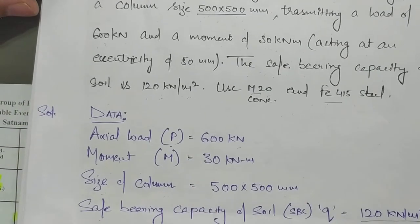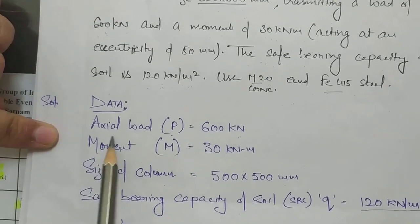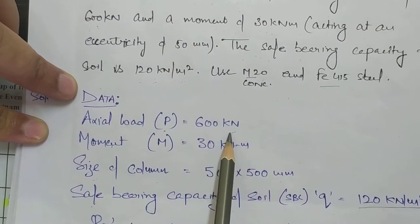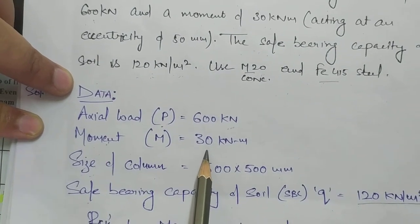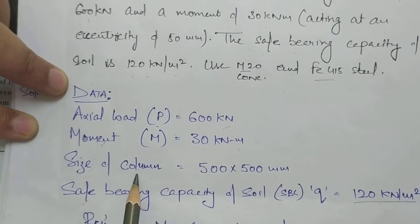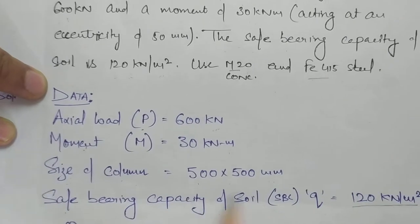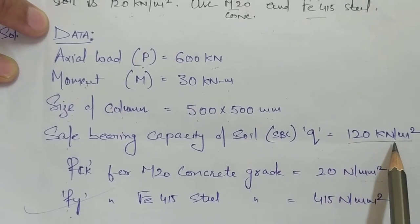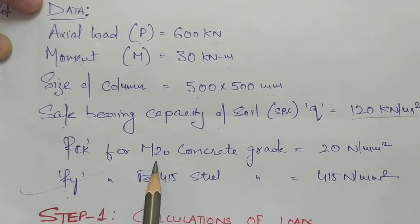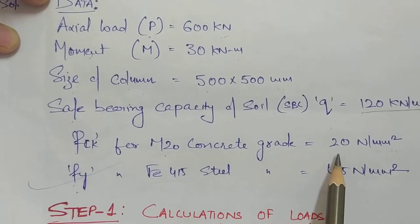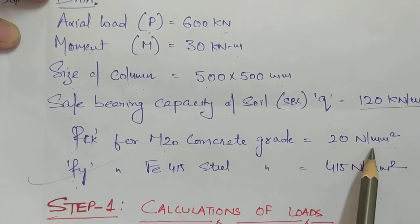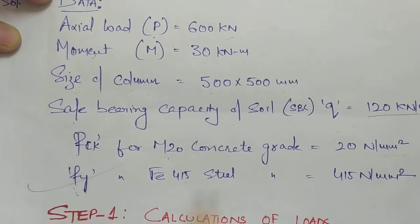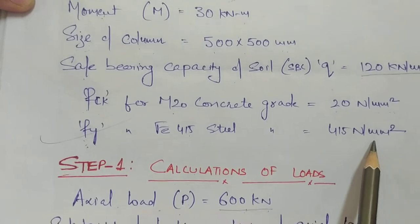First, we write the given data. Axial load P = 600 kilo Newton, moment M = 30 kilo Newton meter, column size = 500×500 mm, safe bearing capacity Q = 120 kilo Newton per square meter. For M20 concrete, FCK = 20 N/mm², and for Fe415 steel, FY = 415 N/mm².